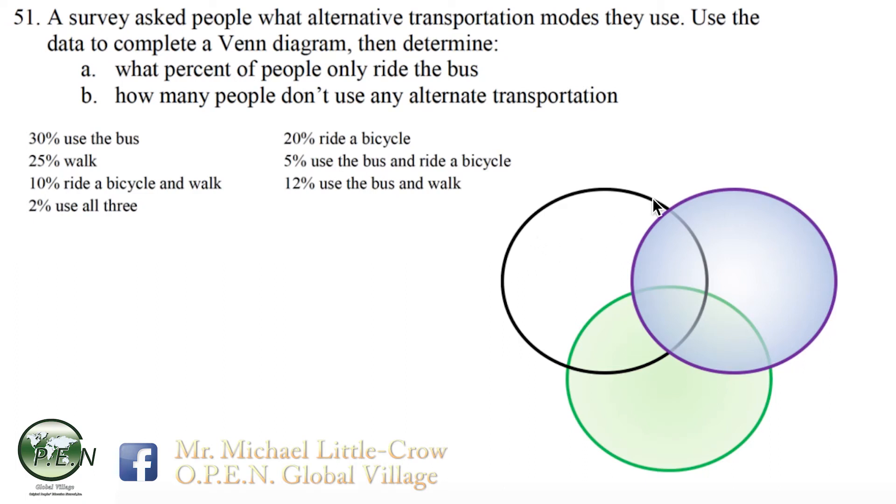To look at this question, it also involves three circles for a Venn diagram. We have three different modes of transportation: bus, walking, or bicycle.